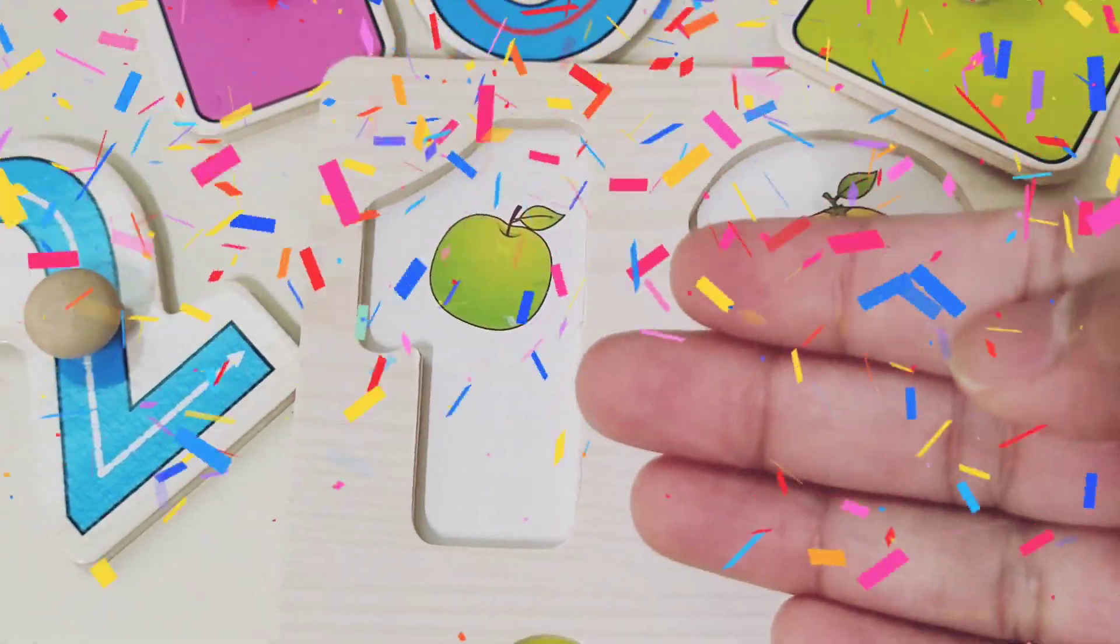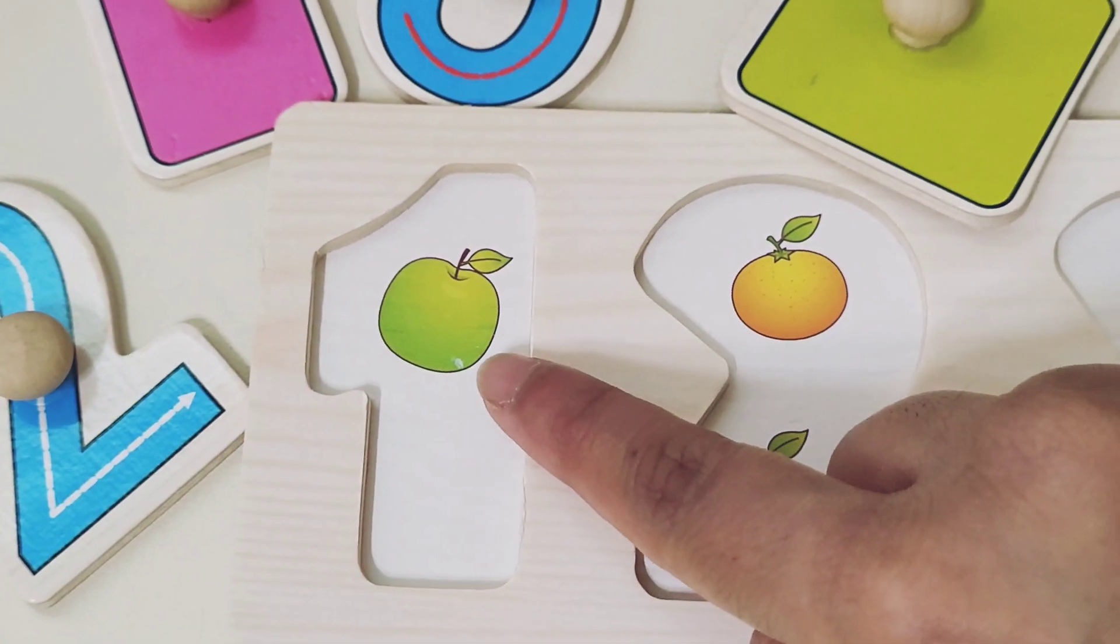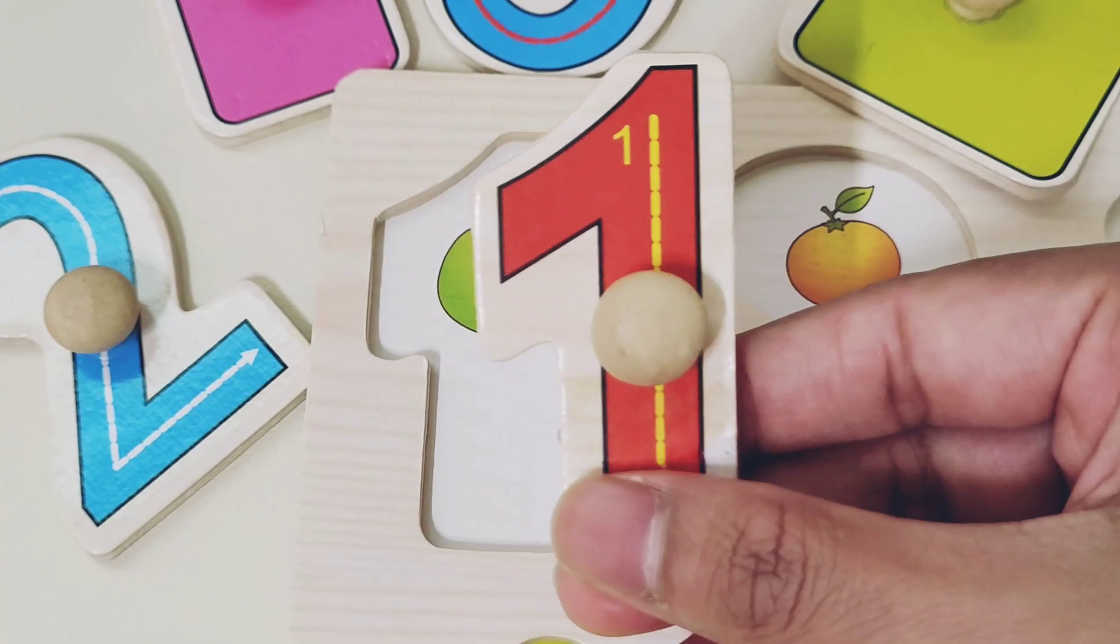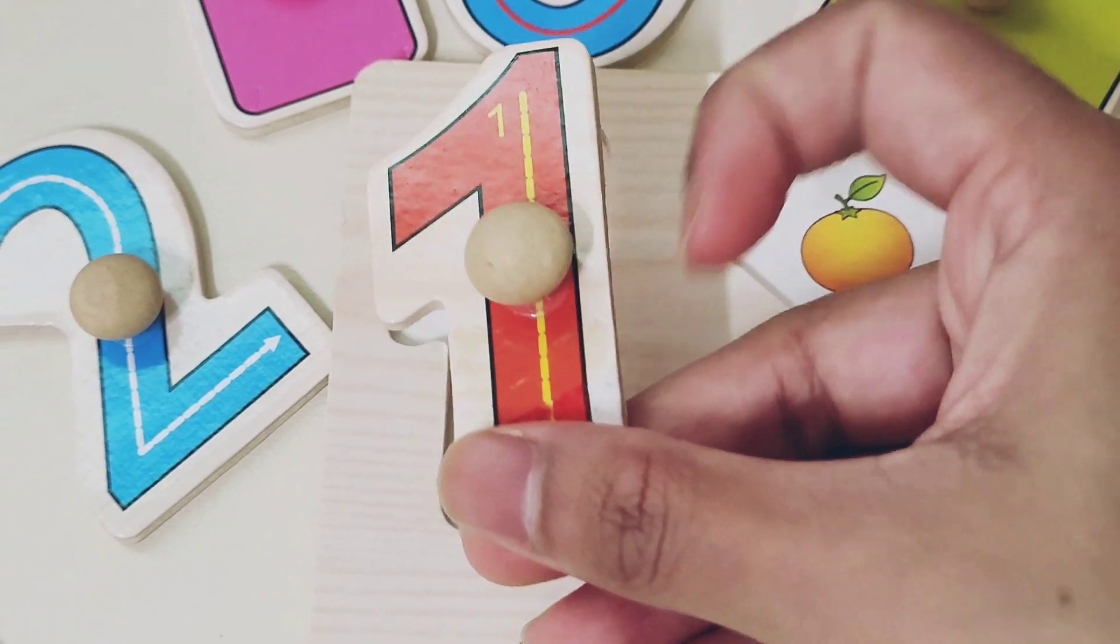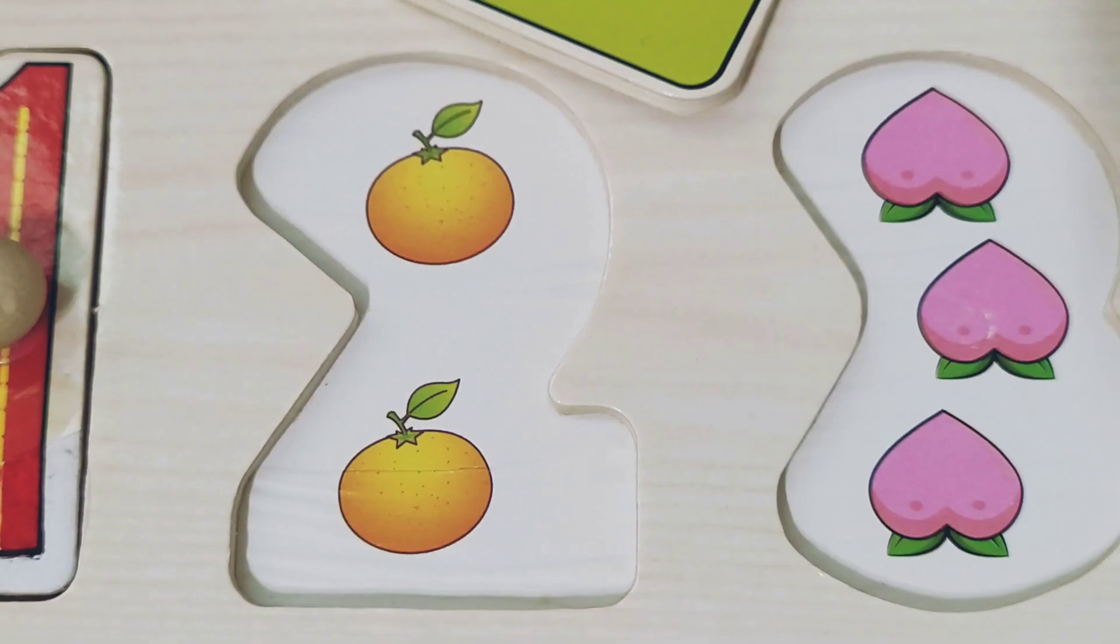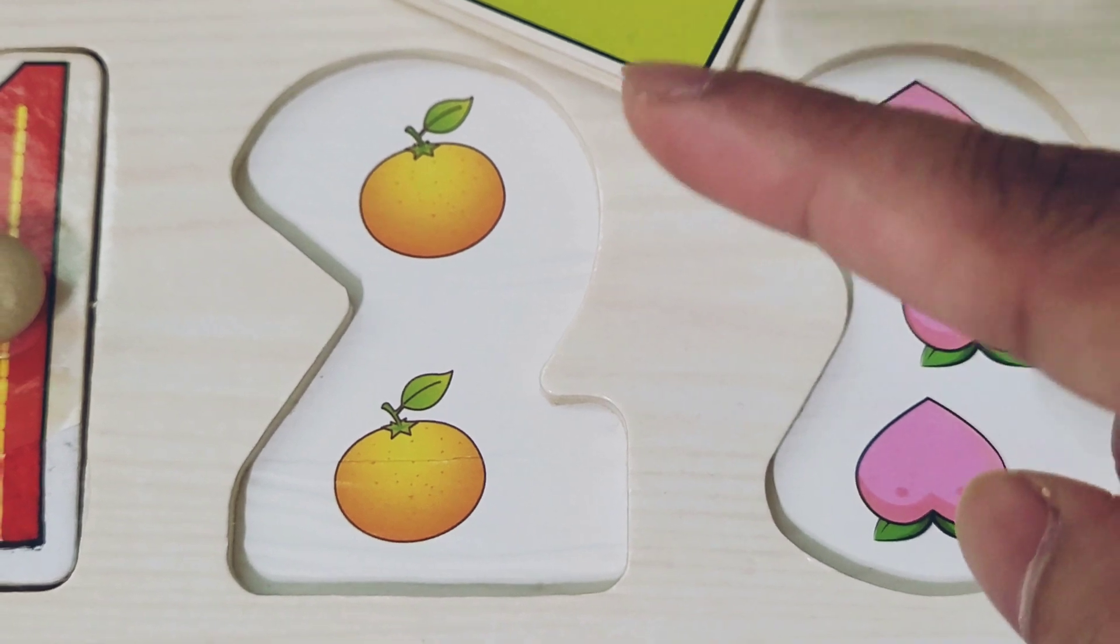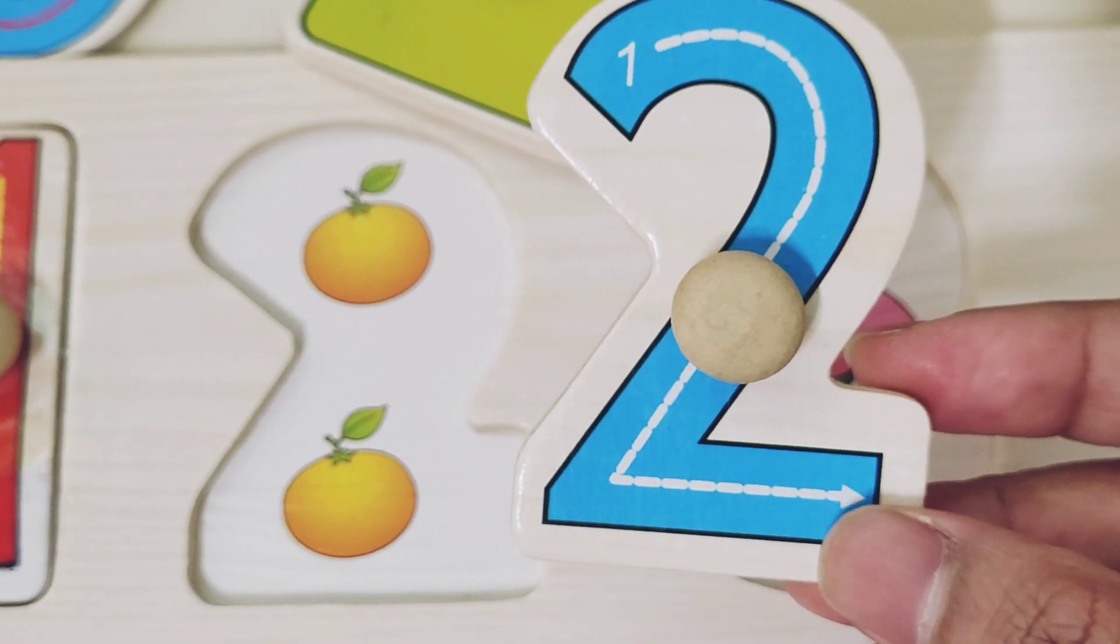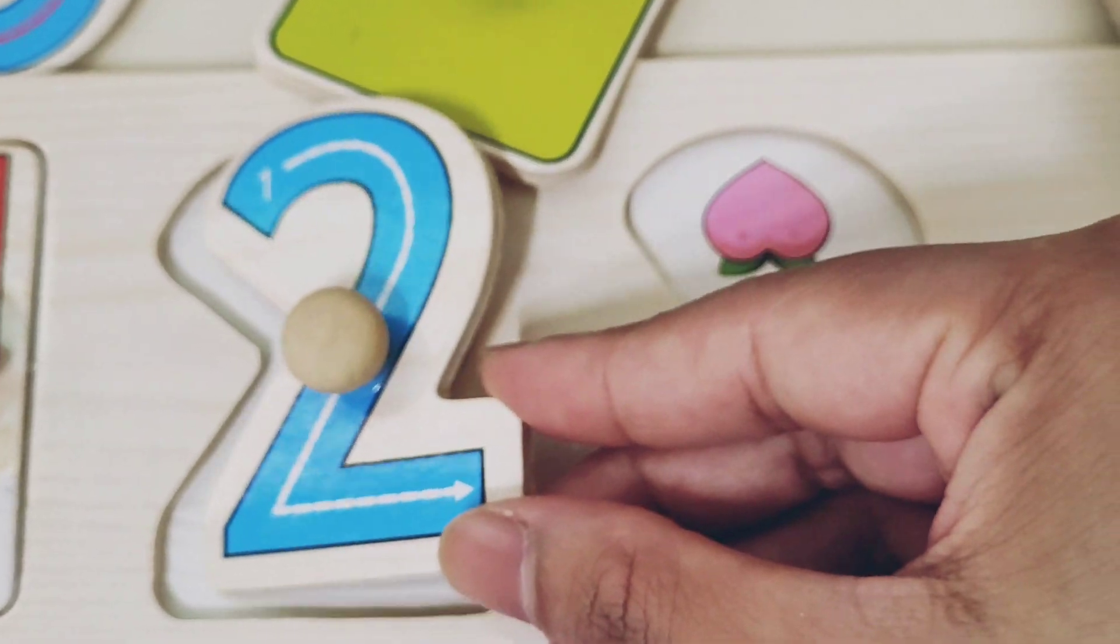This is the number 1. And which fruit is this? Yeah! This is an apple. Let's fit this number 1 here. And here we have 2 oranges. 1 and 2. And this is the number 2. Let's put this number 2 here.